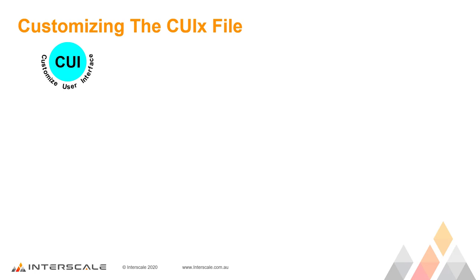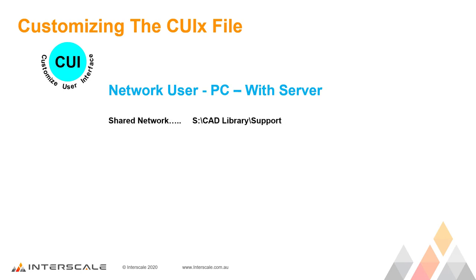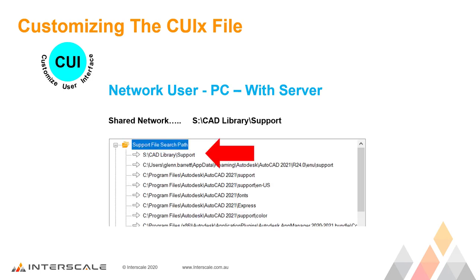The second option is if you are a network user working on your PC with a server, and all users have to use the same company customized CUIX file. Why not create a new folder on the server — in this example your S Drive — with a subfolder called CAD Library, and another subfolder under that called Support. Save the new CUIX file into here. In AutoCAD, go into Options and add this new path to the top of your Support File Search Paths so that AutoCAD finds and uses this folder and its files first. Remember, if this file is edited, it affects all users, so it is normally managed by the CAD Manager.